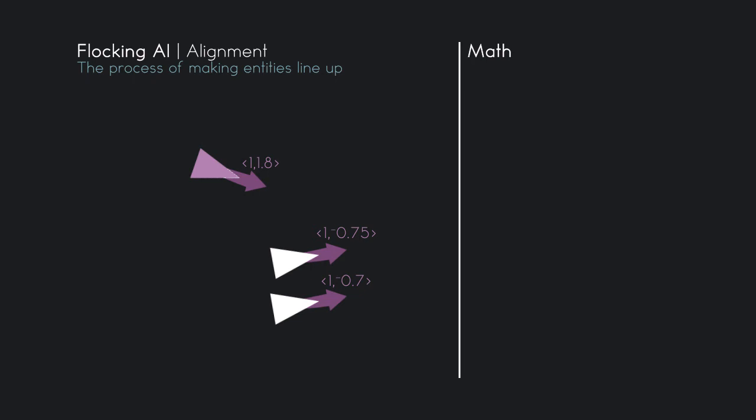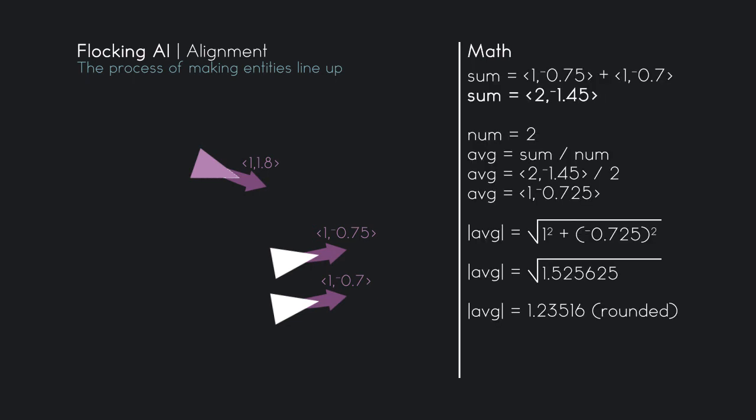So in order to do that we need to average the other entity's velocities. So we sum up the velocity 1, negative 0.75 plus 1, negative 0.7. That will give us a result of 2, negative 1.45. We divide that by the count of entities which is 2 in this case. That will give us a result of 1, negative 0.725.